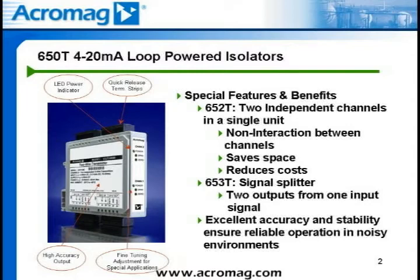The 653T module can be used to retransmit an analog input signal over two independent and isolated output loops to prevent interaction, provide power supply isolation, and eliminate potential ground loops.